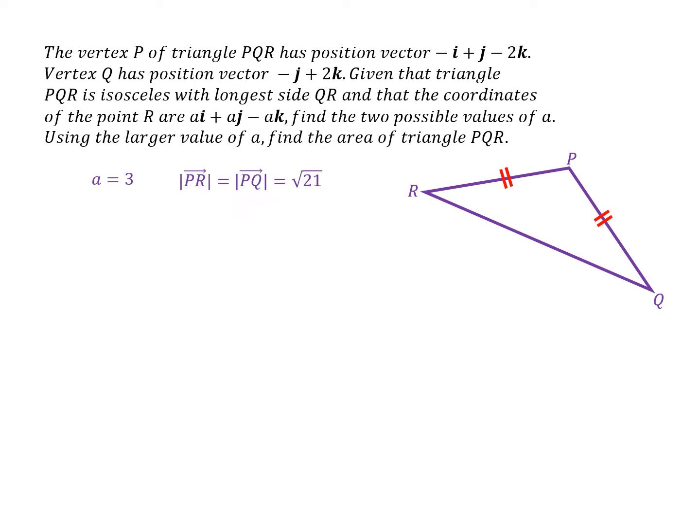So I need to find the lengths of PR, which is root 21. We know that PR and PQ have got the same length and we worked out on the previous page that PQ had a length of root 21. And QR is OR minus OQ. So we can find out what QR is. And now we know QR, we can find out its length.